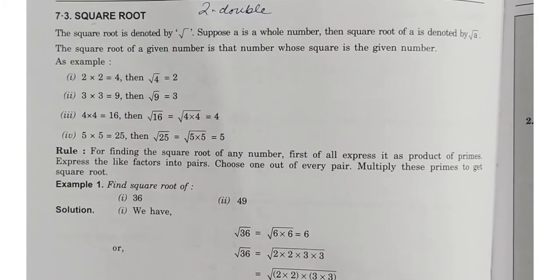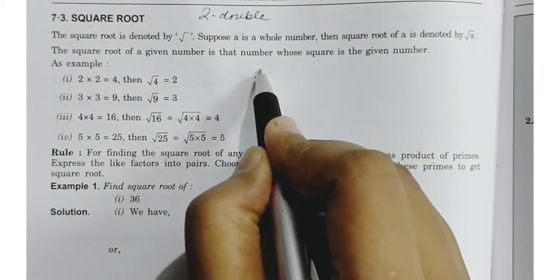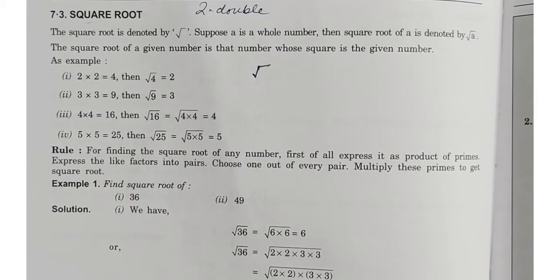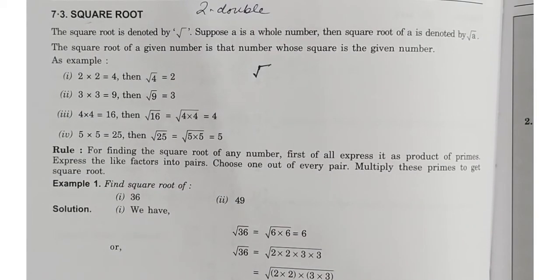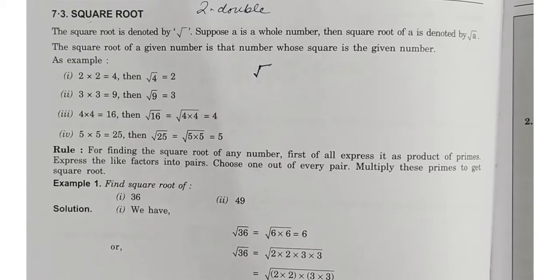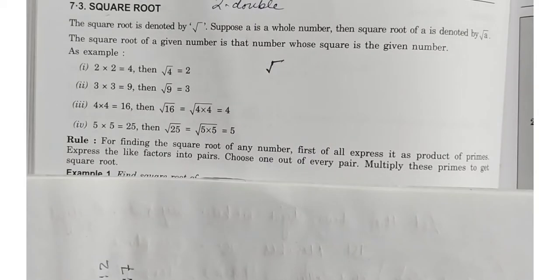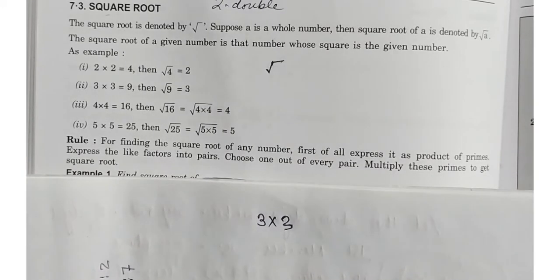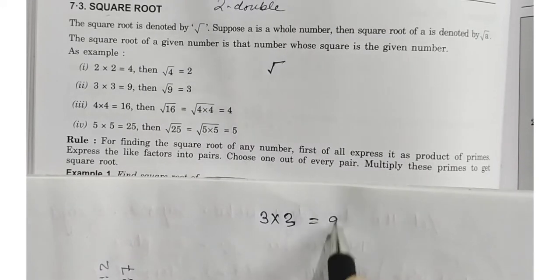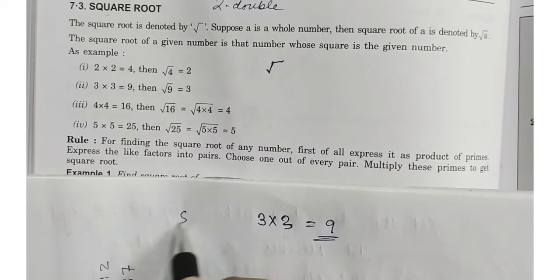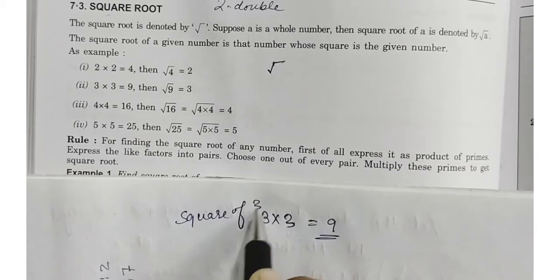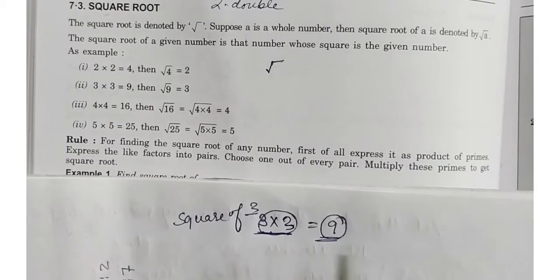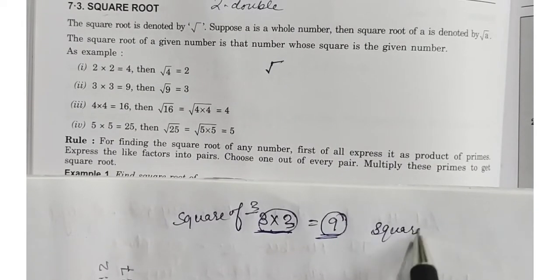Square root — so square root جو ہے وہ اس کا symbol ہوتا ہے کچھ اس طرح سے. Suppose کوئی نمبر ہے، مان لیجئے 3 ہے. تو اگر بولا جائے کہ 3 کا square کیا ہوگا؟ تو آپ کیا بولیں گے؟ کہ 3 کا double — مطلب اس کا square. اس condition میں ہمیں ملتا ہے 9. ہم نے 3 کو 2 بار لکھا، multiply کیا، اور ہمارے پاس 9 آیا — یہ ہمارا square ہوگیا 3 کا.